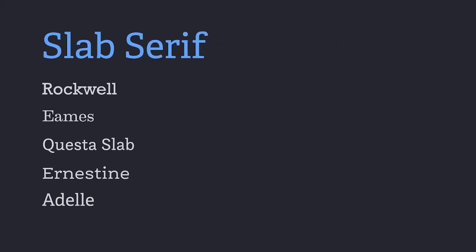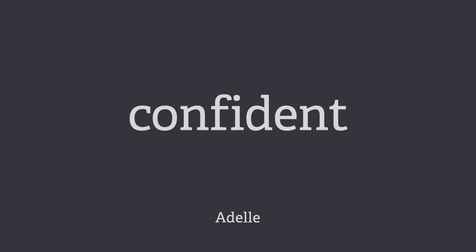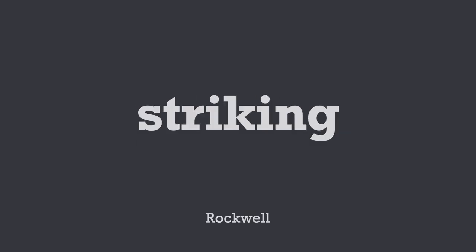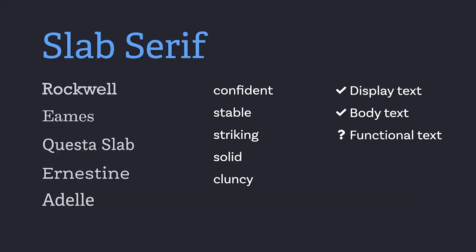Then we have slab serifs. These are typefaces with very strong serifs, and they could seem very confident, stable, striking, and solid — but also maybe clunky and a bit goofy, like westerny. Always depending on the context. Like with serif fonts, for functional text they might not work that well, but they could, depending on the typeface. I'm saying 'depending on the typeface' so many times in these videos that you should make a drinking game out of it.